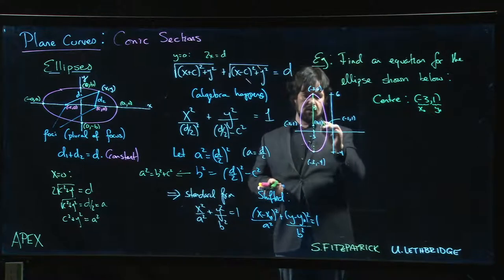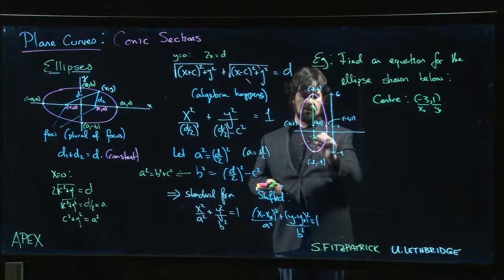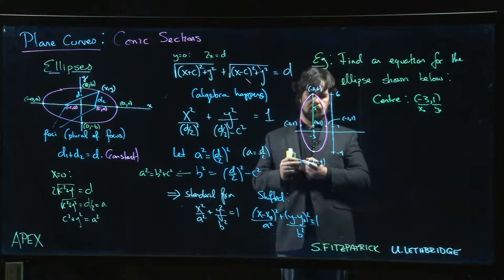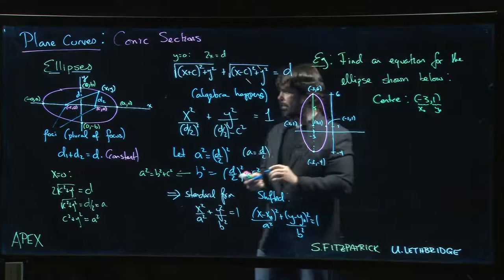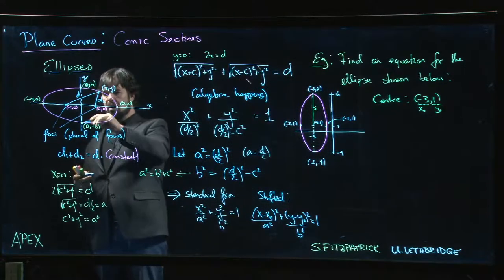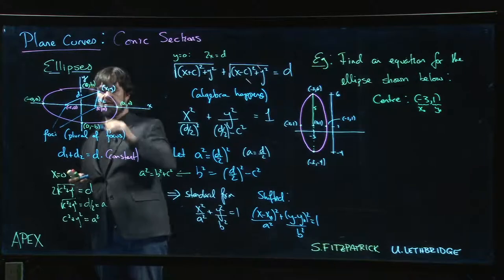Okay, and the width of the ellipse, so the shorter of the two sort of axes here, is called the minor axis. Half the distance, that's the semi-minor axis.